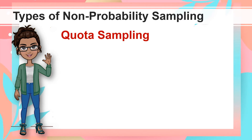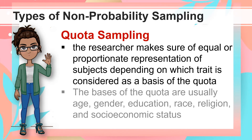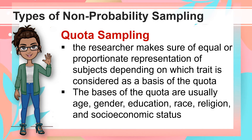The third type is Quota Sampling. It is a sampling technique wherein the researcher makes sure of equal or proportionate representation of subjects, depending on which trait is considered as the basis of the quota. The bases of the quota are usually age, gender, education, race, religion, and socioeconomic status.